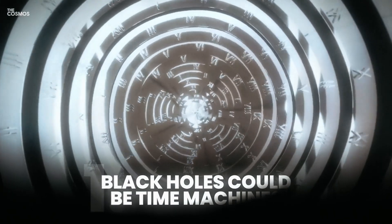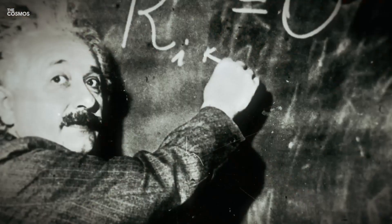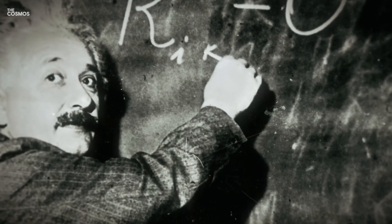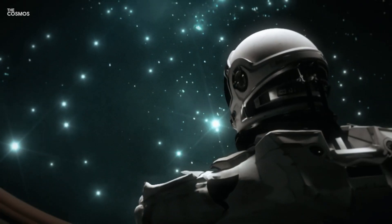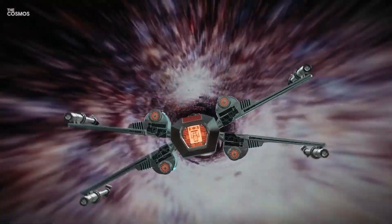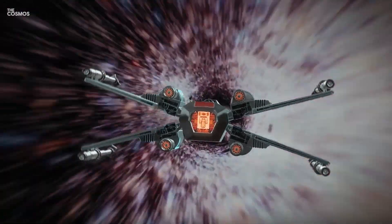Black holes could be time machines. One of the most mind-boggling theories about black holes is that they could act as a time machine. According to Einstein's theory of general relativity, the immense gravitational pull of a rotating black hole might twist space and time, creating a loop that could, in theory, allow for time travel.